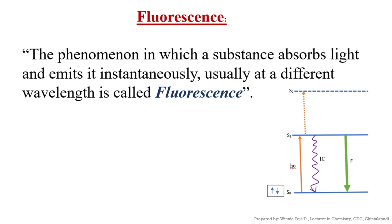Let us try to understand the process that is fluorescence through the Jablonski diagram. Fluorescence is the phenomenon in which a substance absorbs light and emits it instantaneously, usually at a different wavelength. A molecule which is present in the singlet first excited state returns to the ground state by emitting light. This process is called fluorescence.